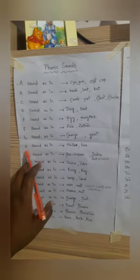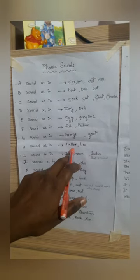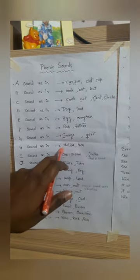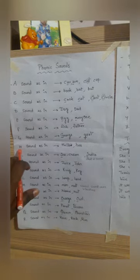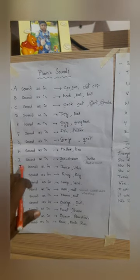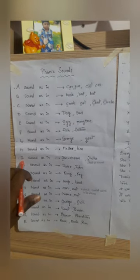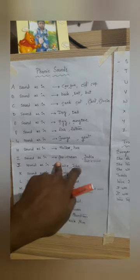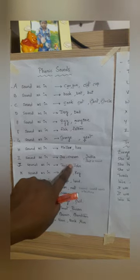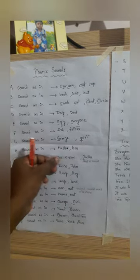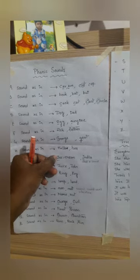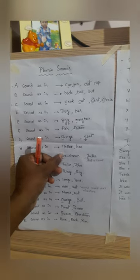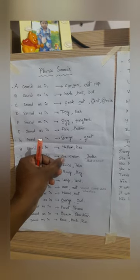Now coming to H — it's hello, hen. So the sound of H is 'h'. For I, it is again two sounds. Here in ice cream, we will give the name to the letter I — ice cream.